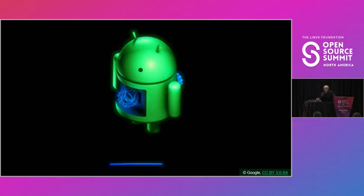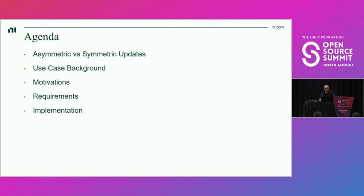We're all familiar with software updates — we see them regularly on our desktop computers, phones, and a million other devices. Today we'll be peeking a little bit behind the scenes to see what's going on in the mechanics behind those updates. We'll start with some background on asymmetric and symmetric software updates, then talk about our use case and the background that drives some of the interesting aspects of our design. I'll cover our motivations, our requirements, and then we'll look at the implementation, focusing on areas that are more interesting from a technology standpoint or applicable to something you might do.